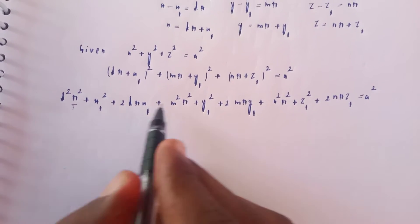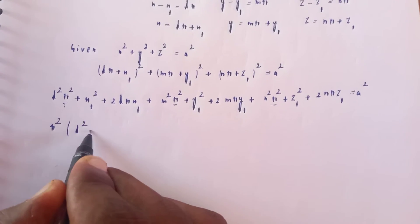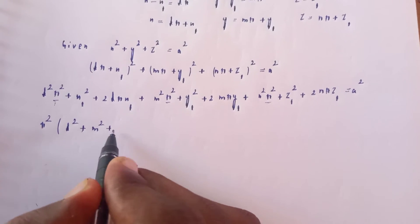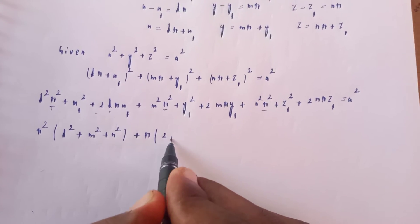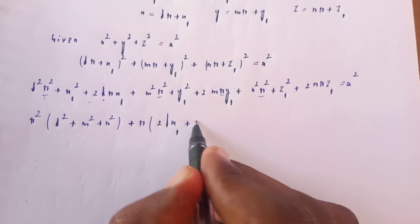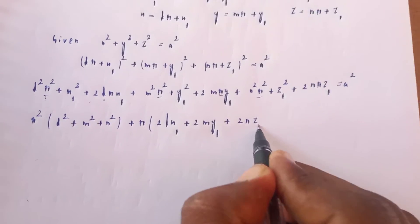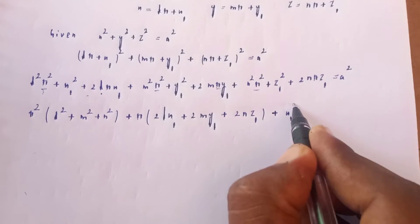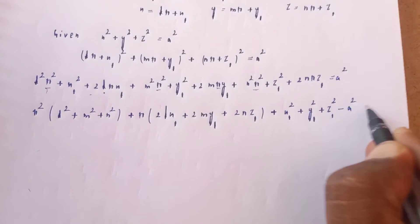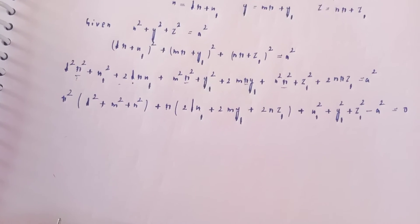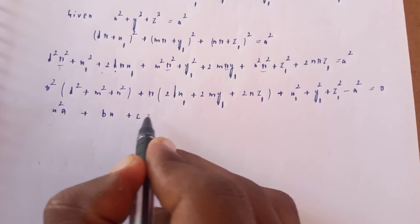Collecting terms: R²(L² + M² + N²) + 2R(Lx1 + My1 + Nz1) + (x1² + y1² + z1² − a²) = 0. This is a quadratic equation in R. Here A = L² + M² + N², B = 2(Lx1 + My1 + Nz1), C = x1² + y1² + z1² − a².